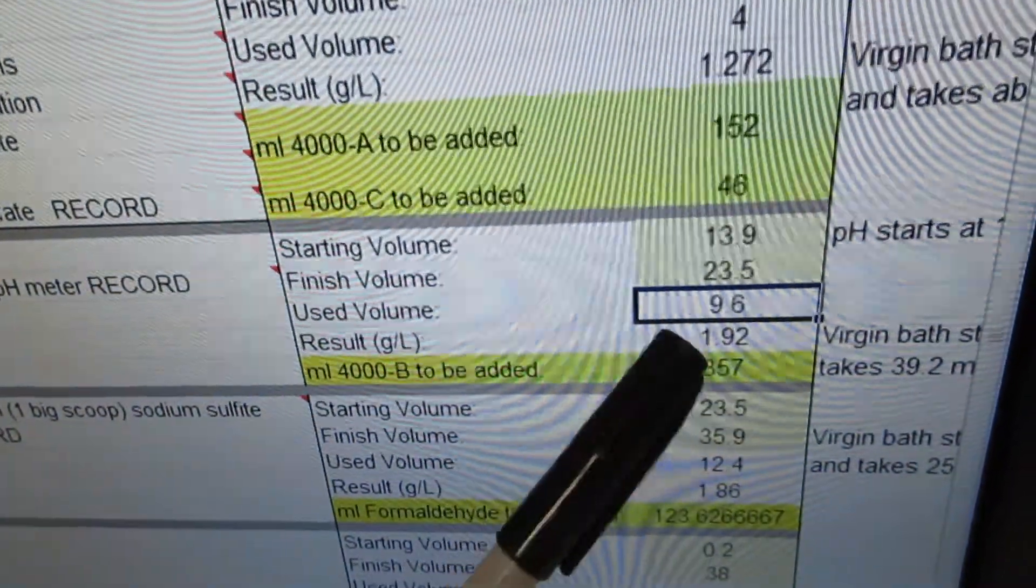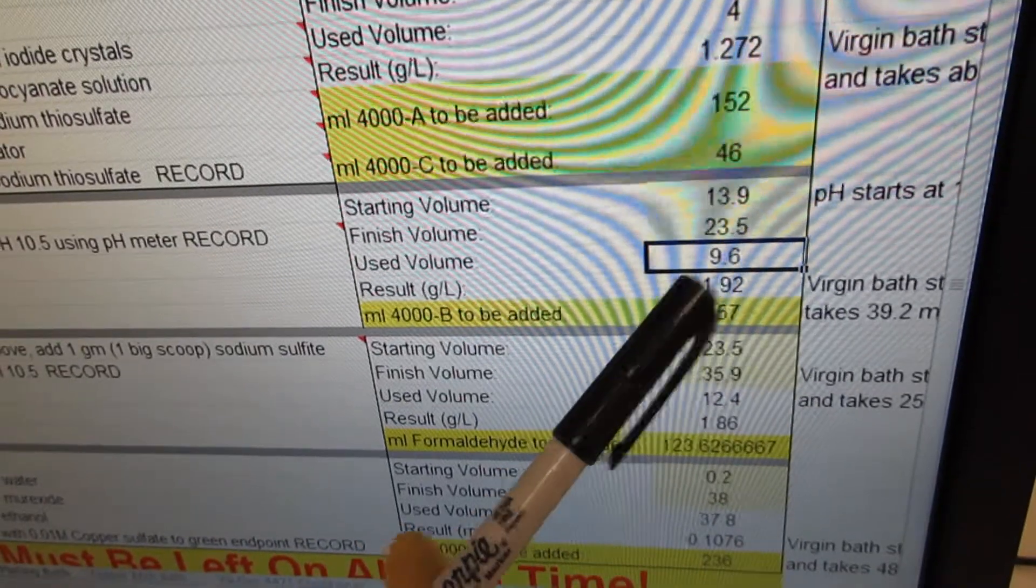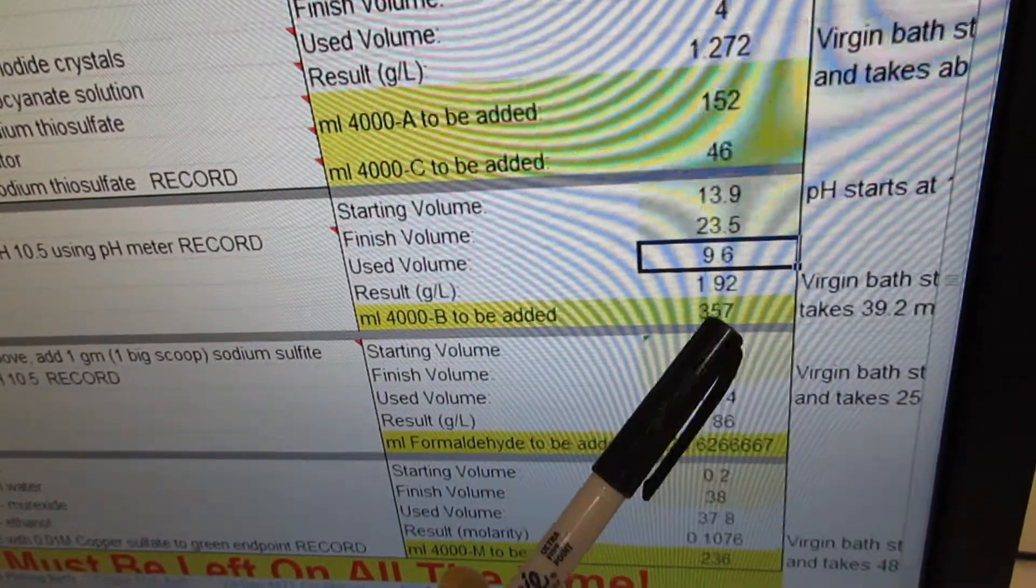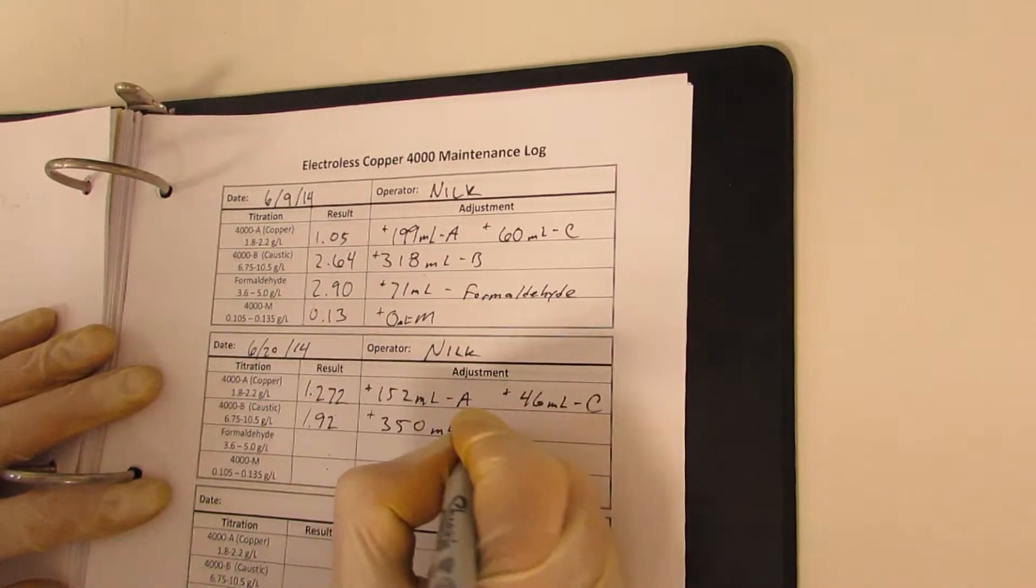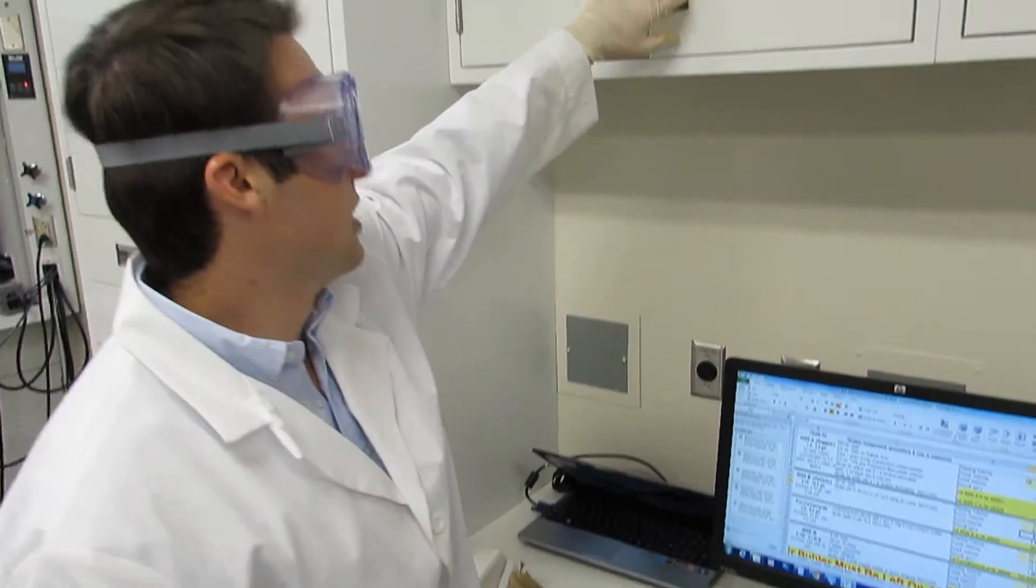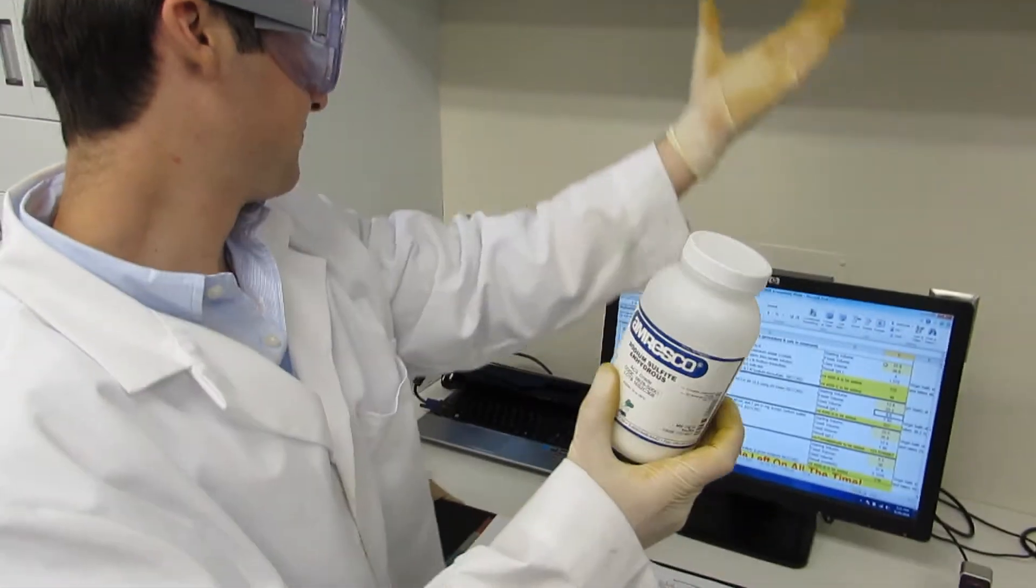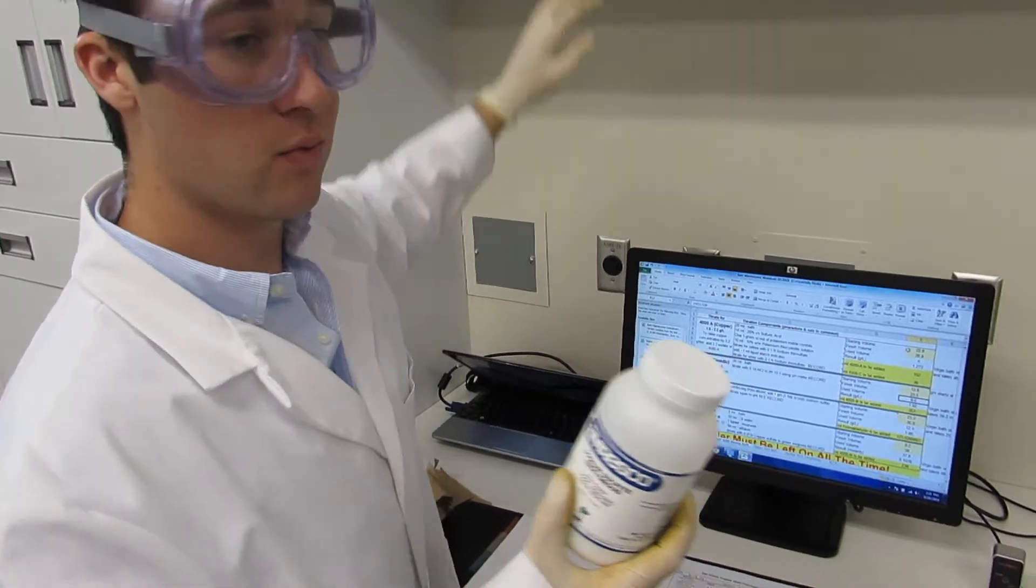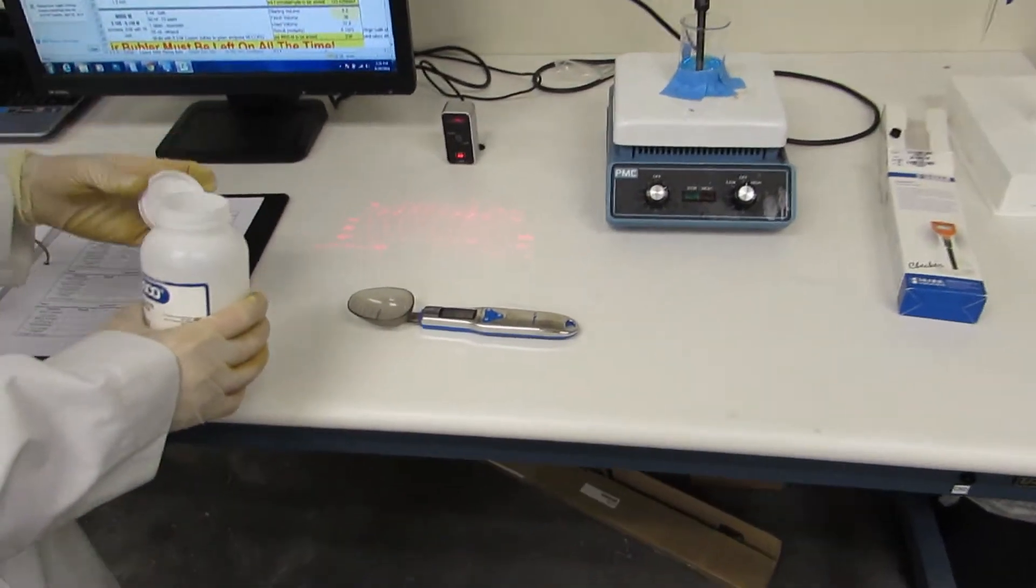Now you see this. It's 357. But we made a rule of having a max of 350 milliliters of B being added. Continuing with the same bath that we just did, we take sodium sulfide and add one gram using the measuring scoop again.